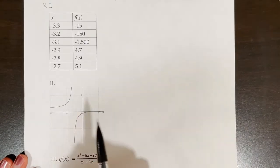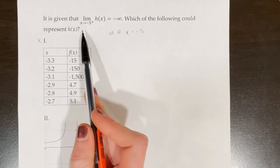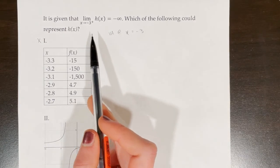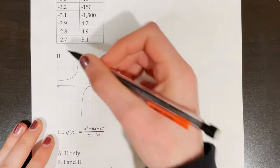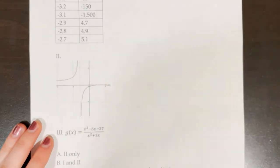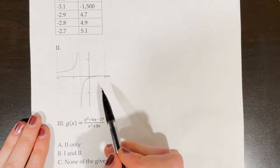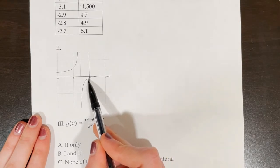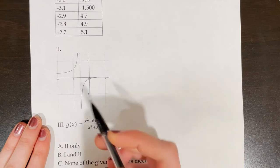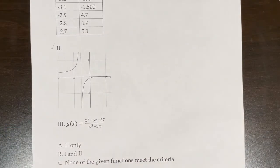For function 2, recall the criteria: the limit of h(x) as x approaches −3 from the right must equal negative infinity. Drawing a line at x = −3 on the graph and checking the right side, the function is going to negative infinity. So function 2 works.